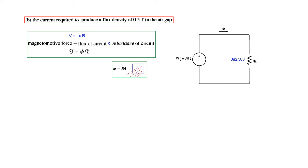Now, flux Φ equals magnetic flux density B multiplied by area A — these are the field lines passing through a unit area. Also, magnetomotive force MMF is given by number of turns N multiplied by current I. So our relation MMF = Φ × R becomes N·I = B·A·R, and therefore current I = (B · A · R) / N.